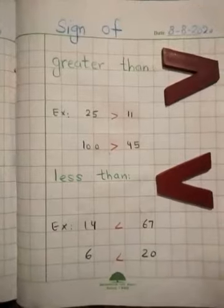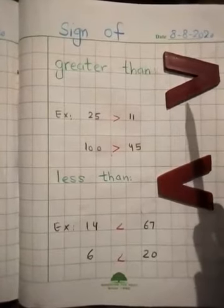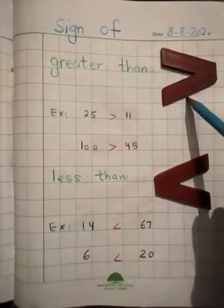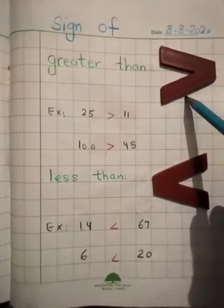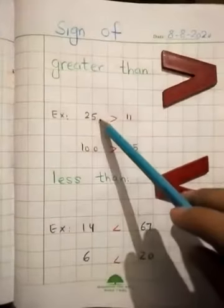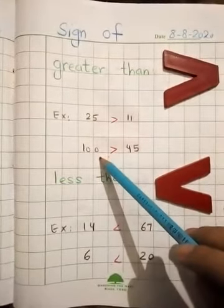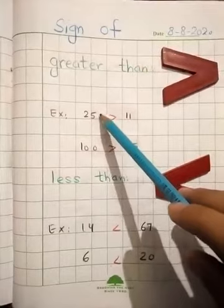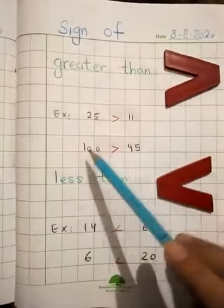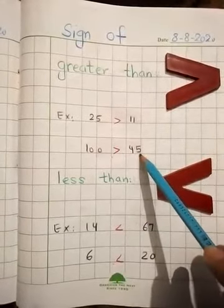Let's start. Before starting the exercise, you have to remember some signs. This is the sign of greater than. The numbers with more digits is always greater. Here you can see 25 is greater than 11. 100 is greater than 45.